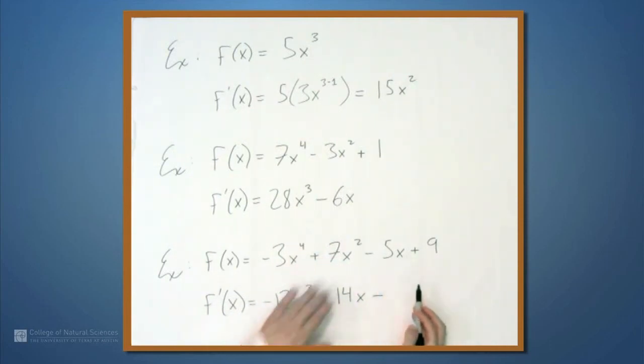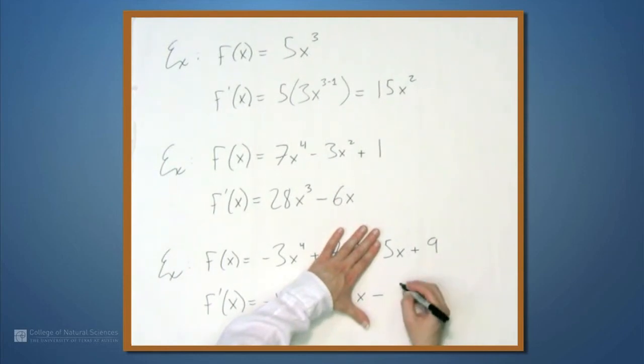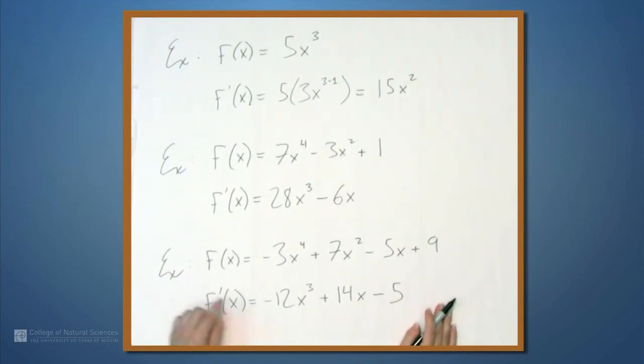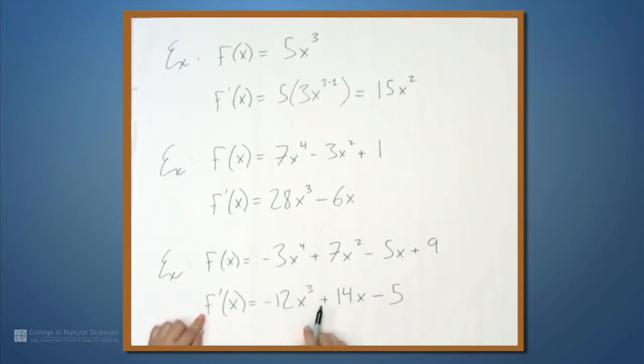Now minus, what's the derivative of 5x? Well, we saw that before. That's just 5. And the derivative of 9. 9 is a constant, so it disappears altogether. So f prime is negative 12x cubed plus 14x minus 5. And that's how you differentiate a polynomial.